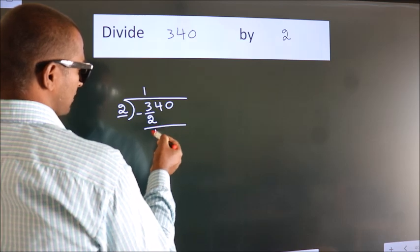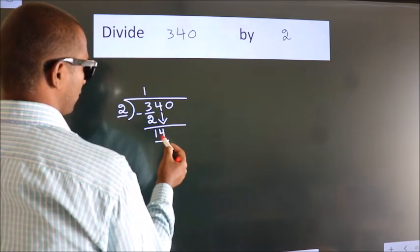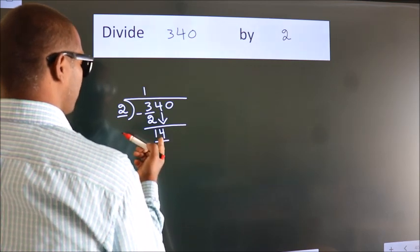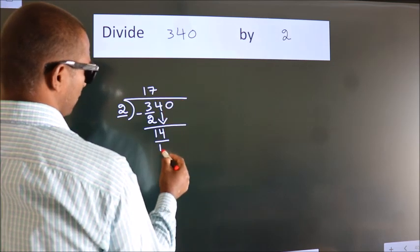After this, bring down the beside number. So, 4 down. So, 14. When do we get 14? In 2 table. 2 times 7 is 14.